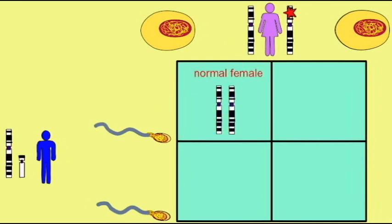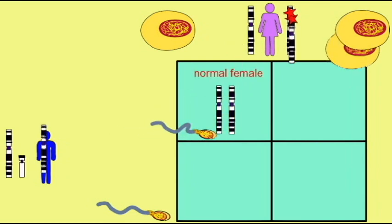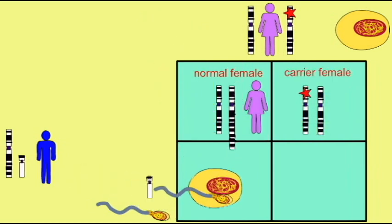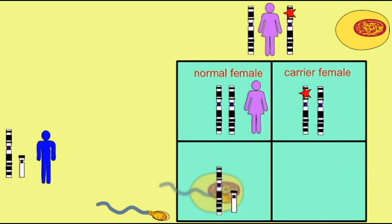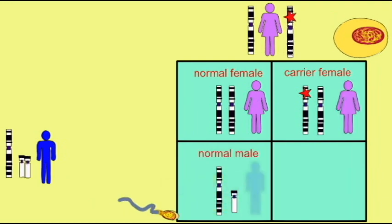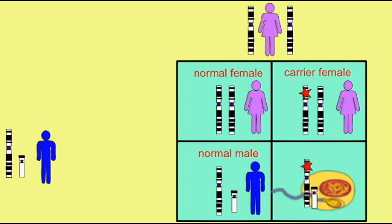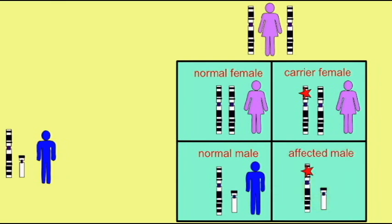Half of the male offspring will be normal, and the other half will be affected. They will receive a recessive mutation from their mother on their X chromosome and not have a good copy of the gene to compensate for this, so they will be affected with the recessive trait.